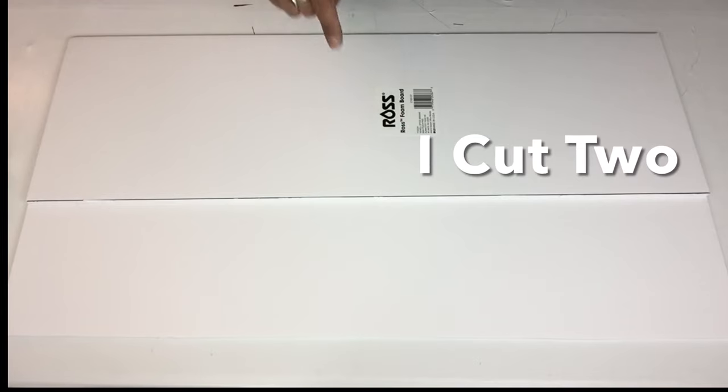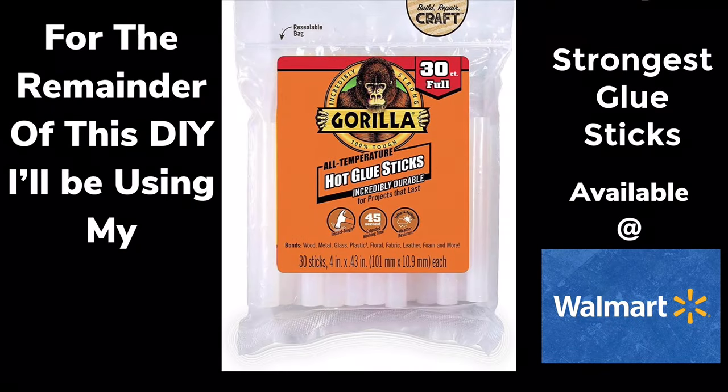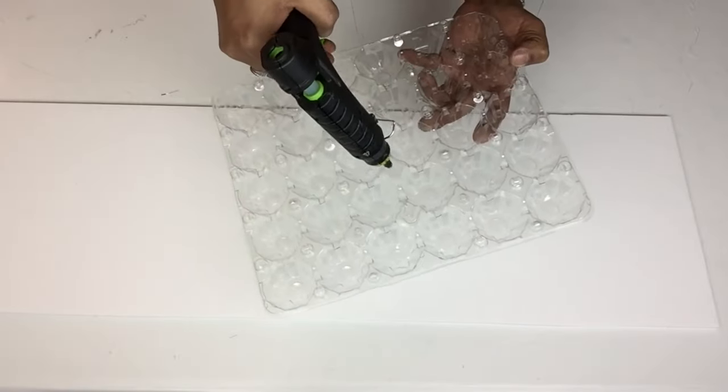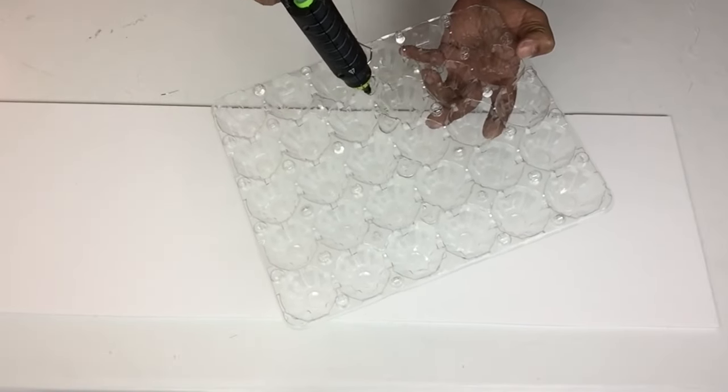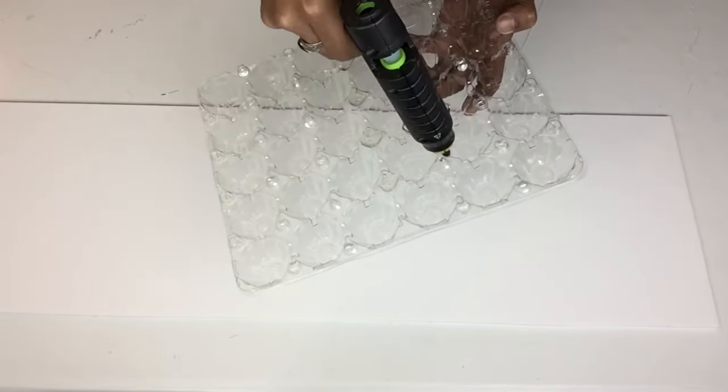For the remainder of this DIY I'll be using my strongest glue sticks. Next I'll be applying hot glue on the flat side of the egg holders and placing them on my foam board.